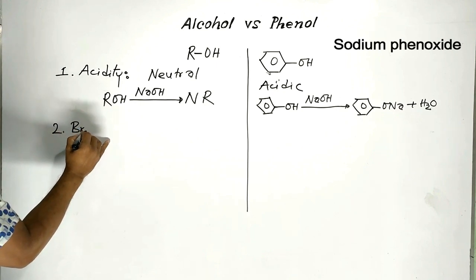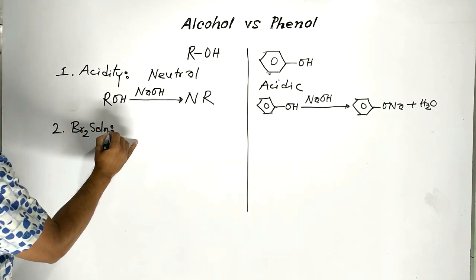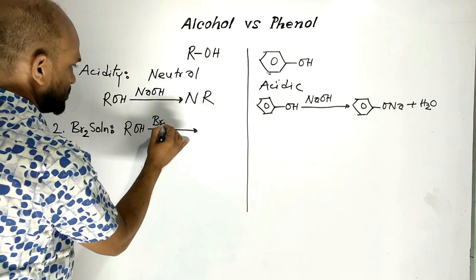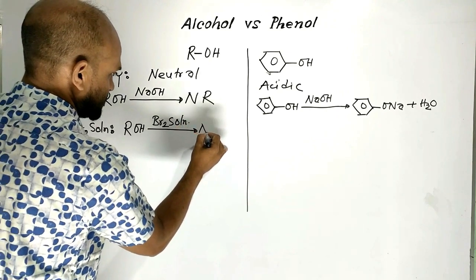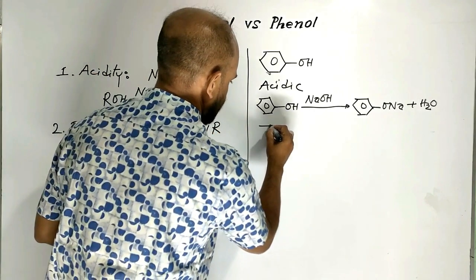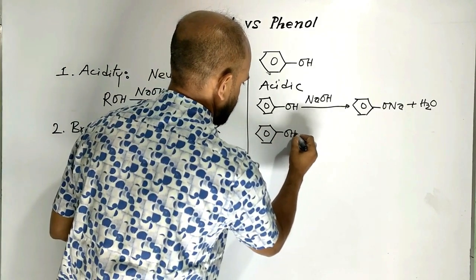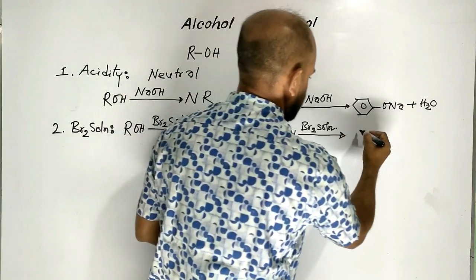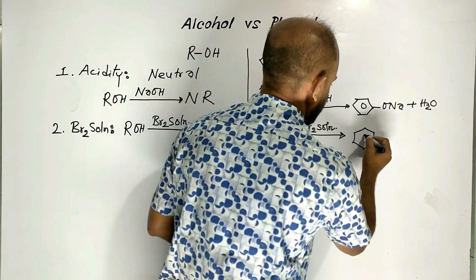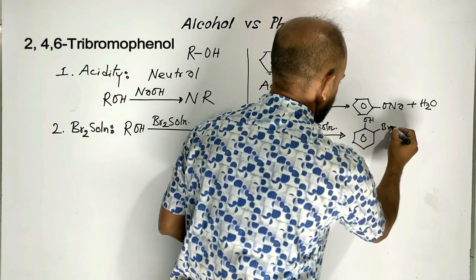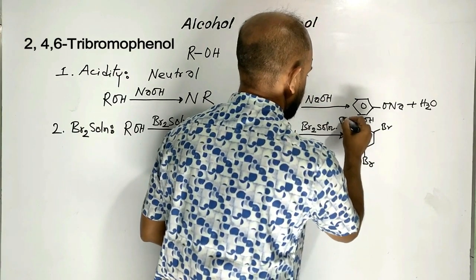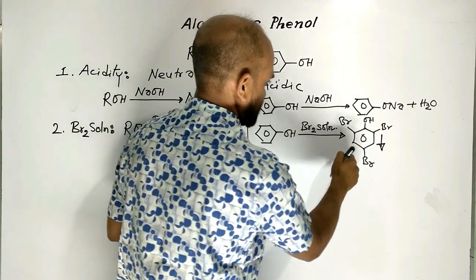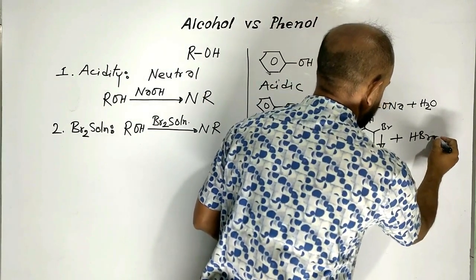Point number two: bromine solution. Alcohol does not react with bromine solution — no reaction. But phenol reacts with bromine solution, and as a result a white precipitate of 2,4,6-tribromophenol is formed. Hydrogen bromide is formed as a byproduct.